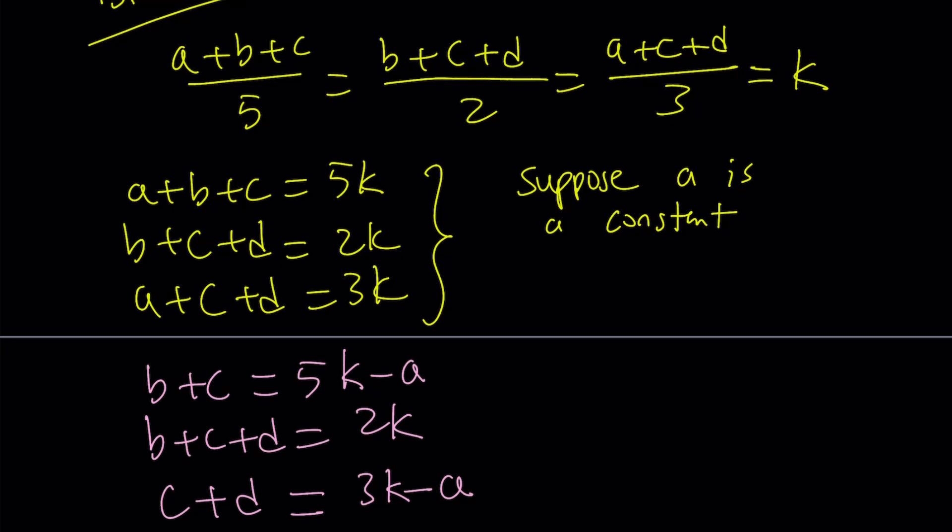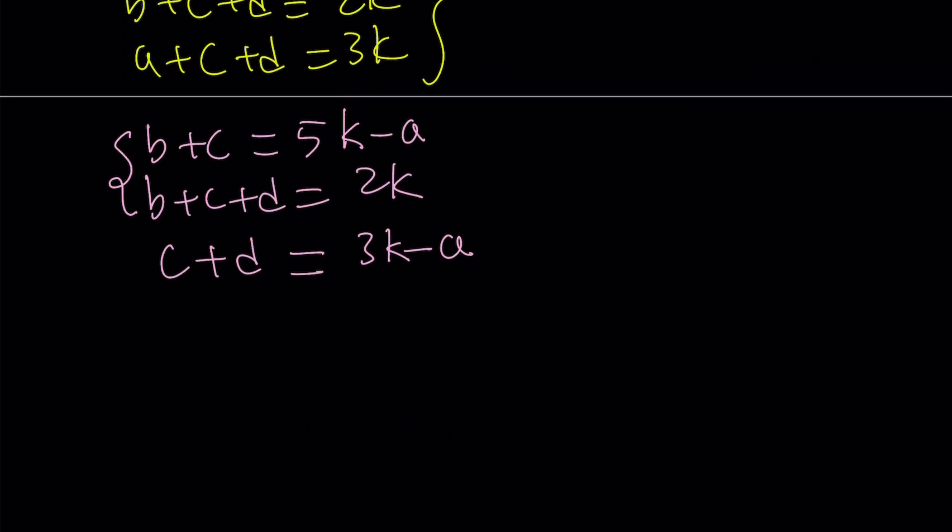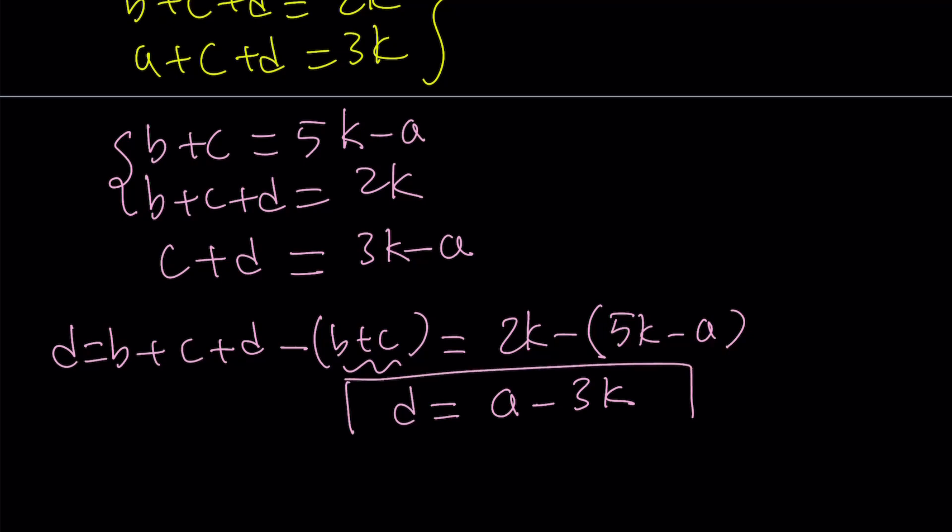Now, here's what I'd like to do. I'm kind of looking at the first two equations. From there, by using those two equations, I can find d by way of subtraction. Let's go ahead and subtract b plus c plus d minus b plus c. That's going to give us d. But b plus c plus d is 2k, and b plus c is 5k minus a. So from here, we get d equals a minus 3k.